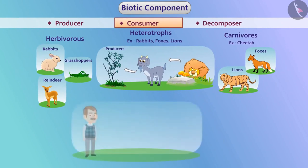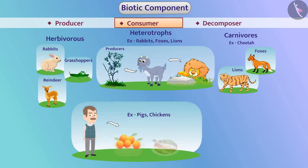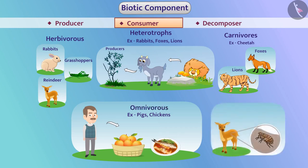Some organisms such as humans, pigs, and chickens obtain their food from both plants as well as other animals. These are called omnivores. Some organisms like kilni, lice, plasmodium, and amarbale etc. obtain food from the body of other organisms without killing them. These are called parasites.